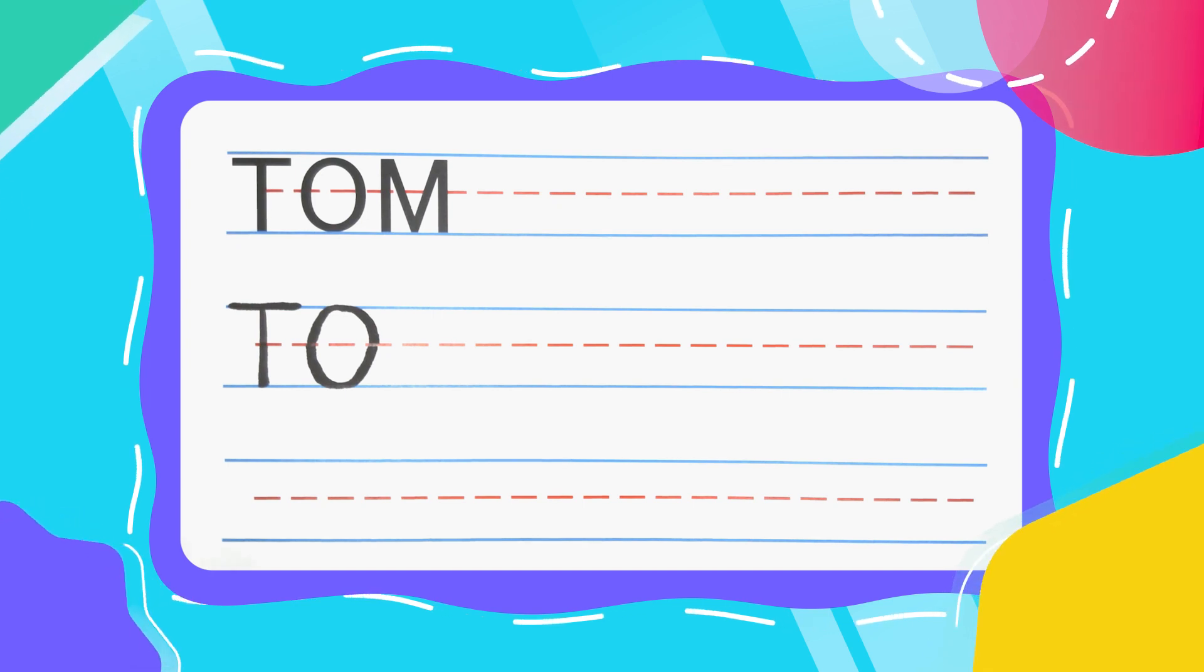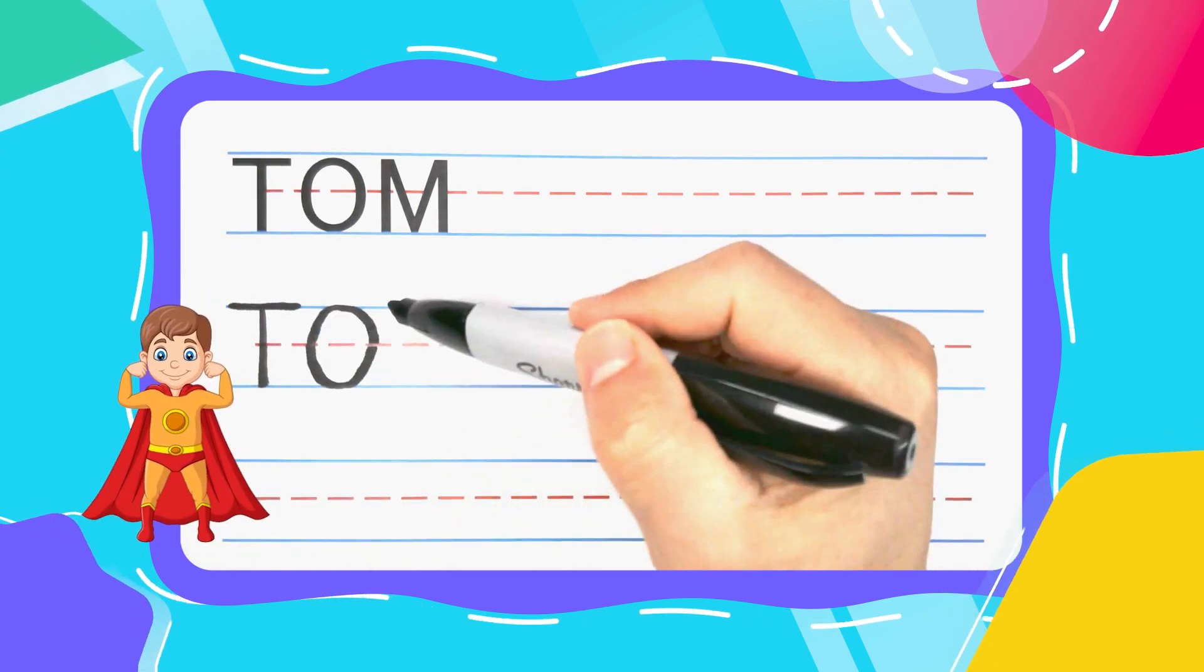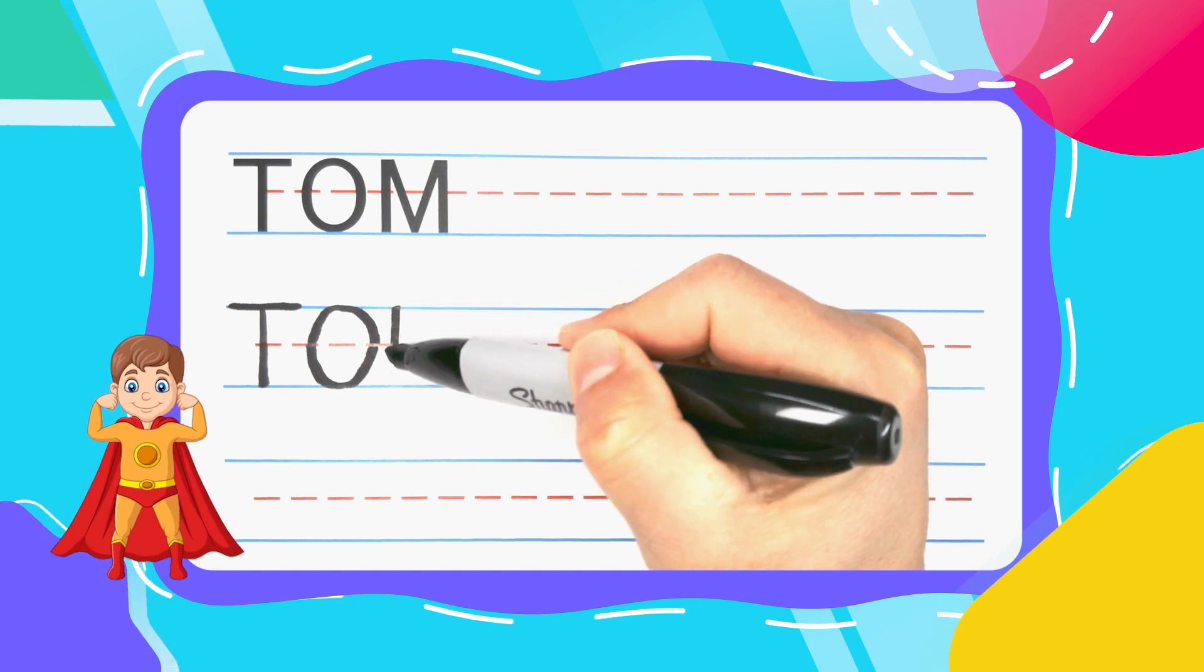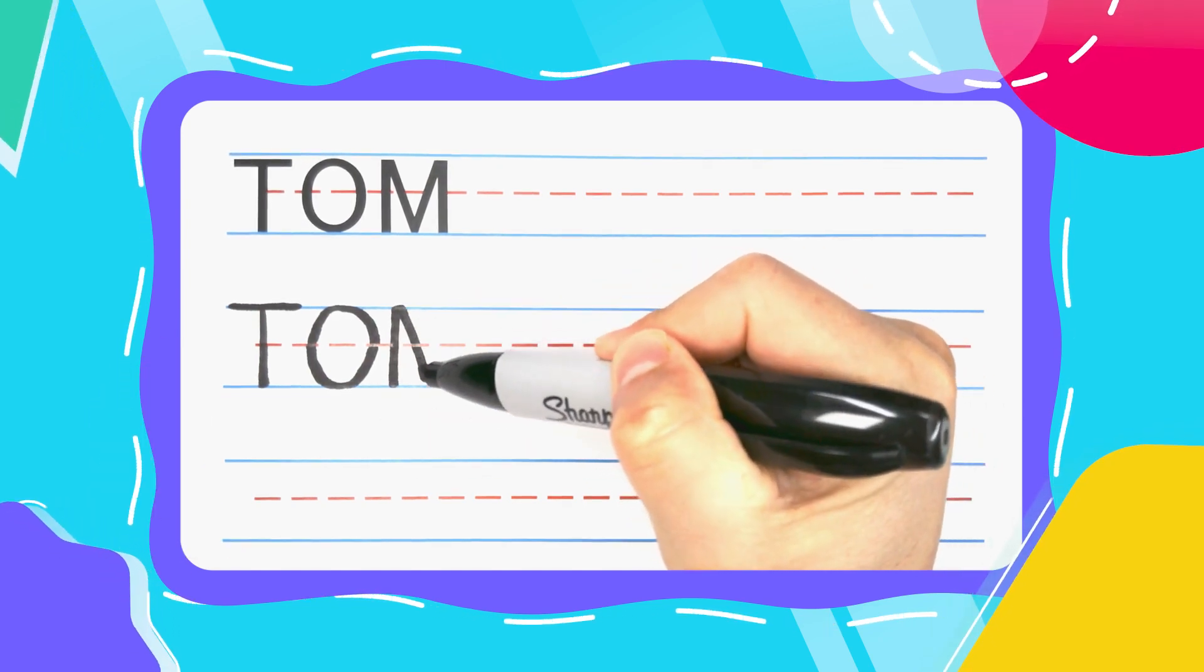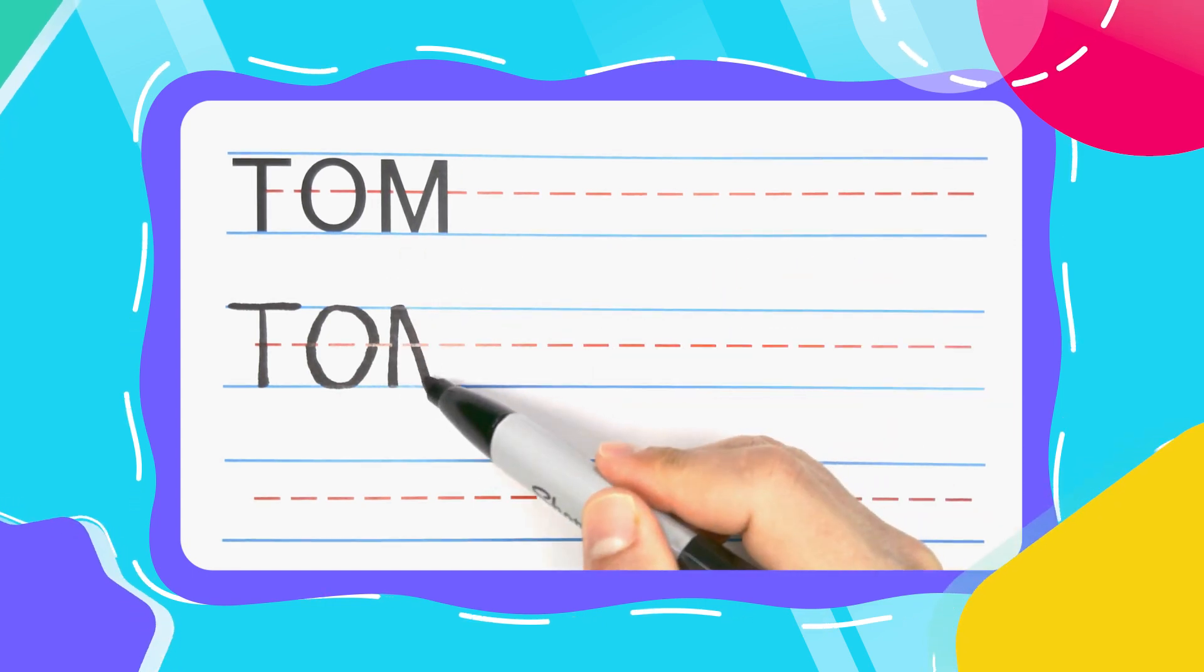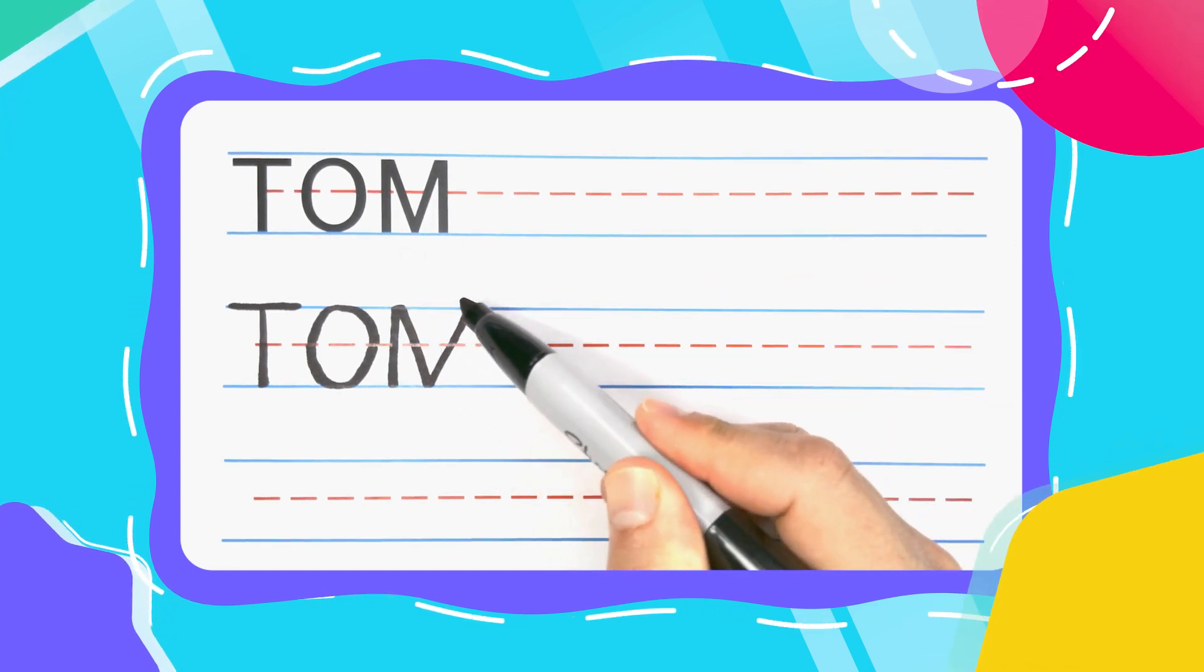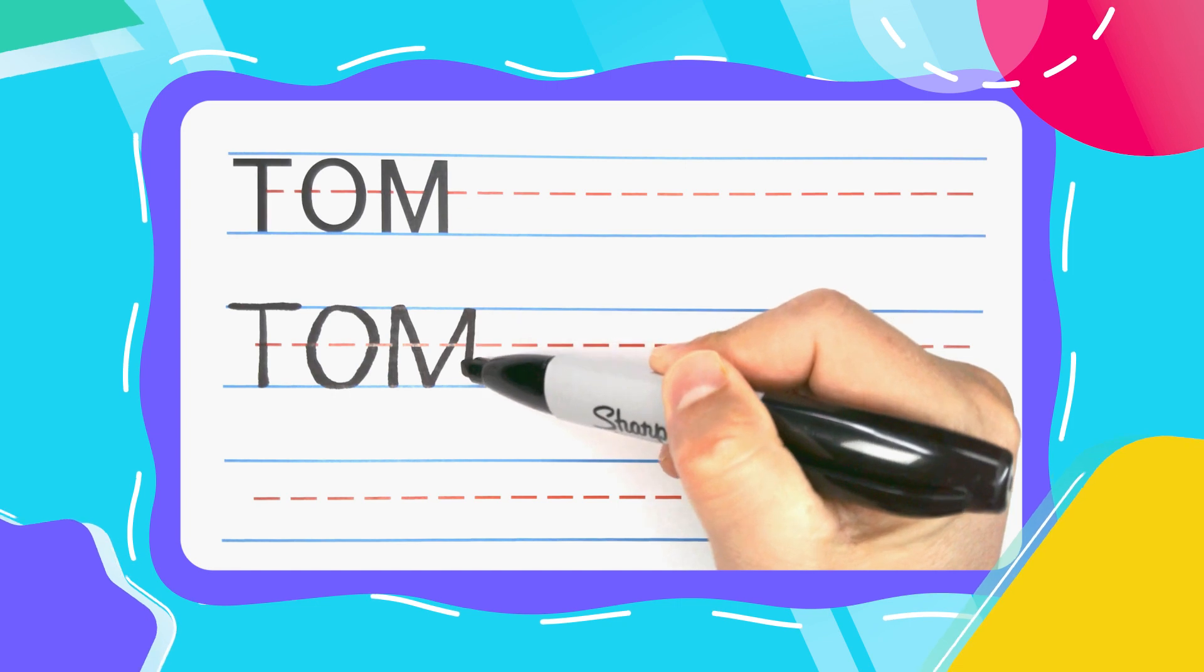And the last letter in Tom is the M. M's start with the straight up and down line. Then come up to the top, diagonal down. Keep your pen there, diagonal back up. Keep your pen there, and diagonal right back down.